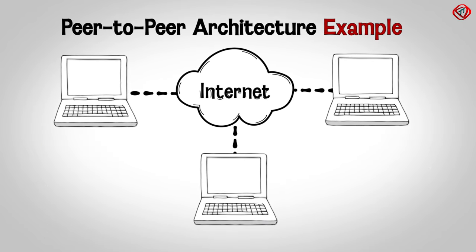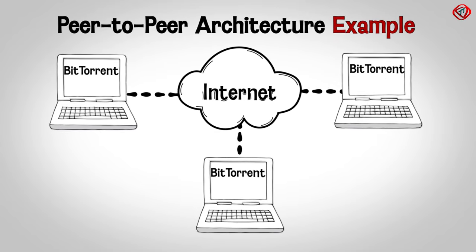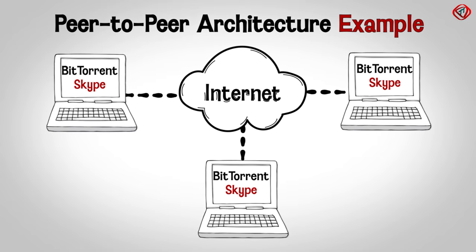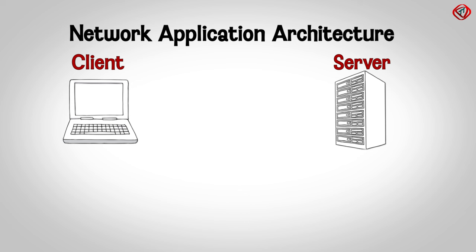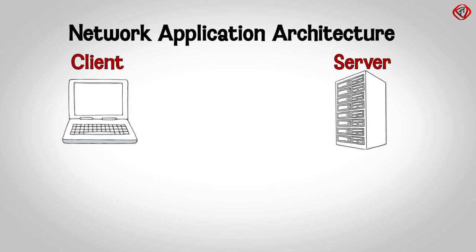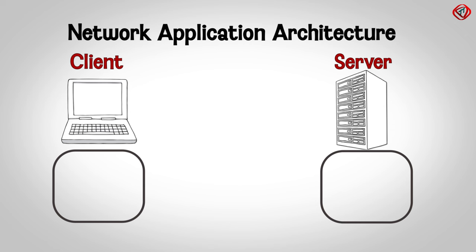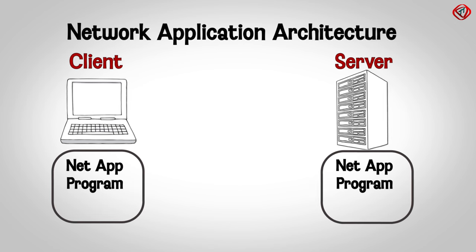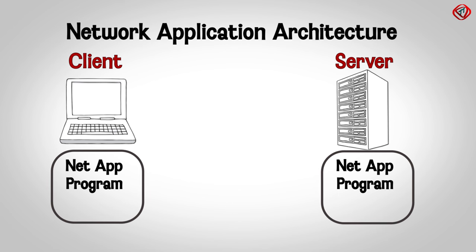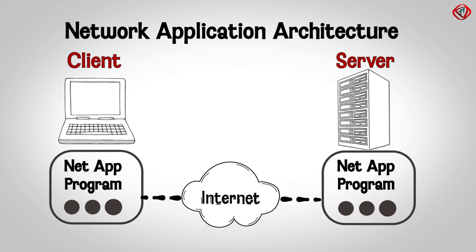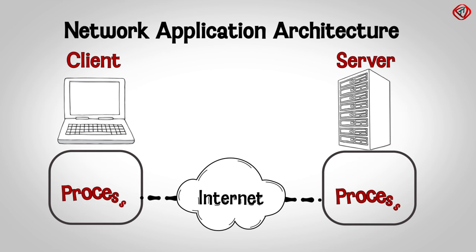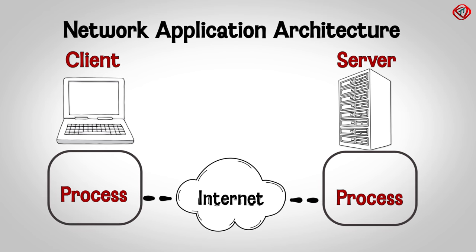Network applications using peer-to-peer architecture include BitTorrent, Skype, etc. As discussed, both network application architectures involve a client and a server. The system initiating the request is referred to as the client, while the system receiving the request is known as the server. Within the client and servers, there are network application programs that create and receive requests — it is a program running on both client and server which communicates with one another over a network. A running program is called a process, so it is a process which communicates with each other.